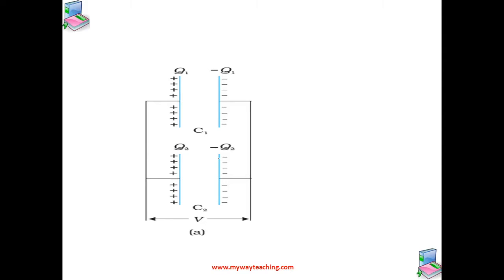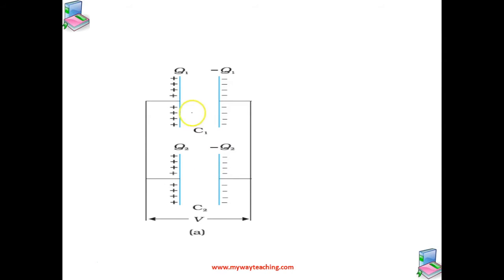In this figure, we can see two capacitors arranged in parallel. The same potential difference V is applied across both capacitors, so the potential across each capacitor is the same. In the series case the potential was different for each — V1, V2, V3 — but here it is the same. However, the plate charges on capacitor 1 and capacitor 2 are not the same, unlike the series case where charges on each capacitor are equal.